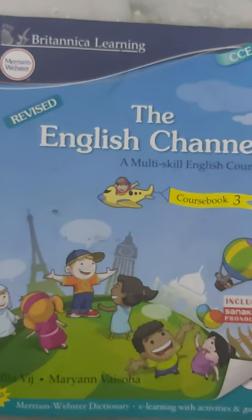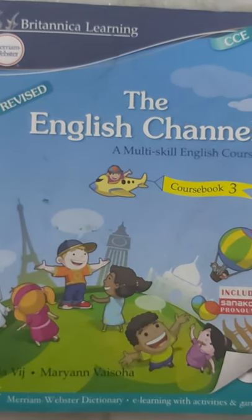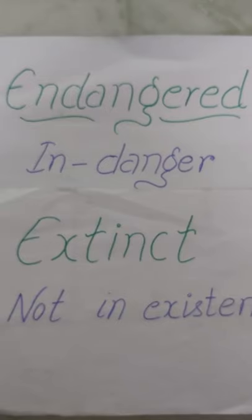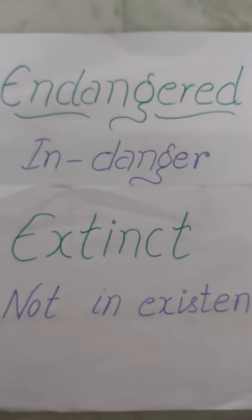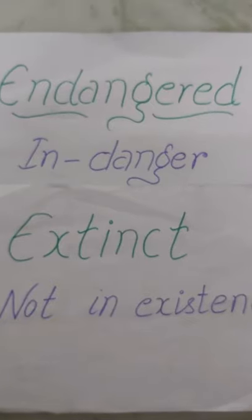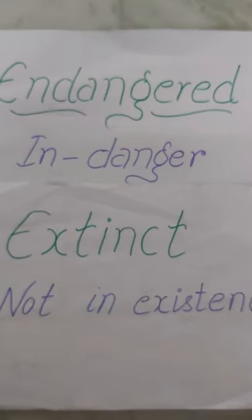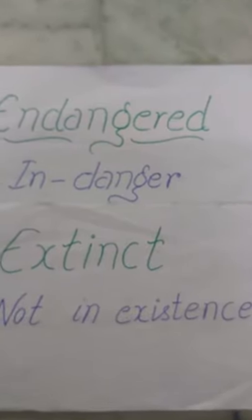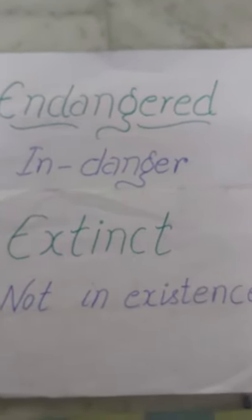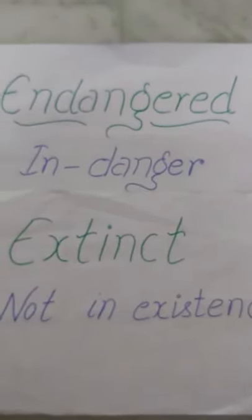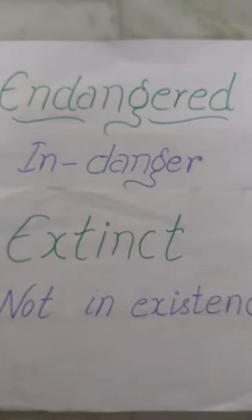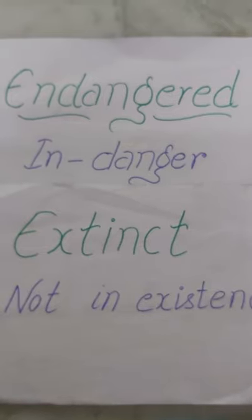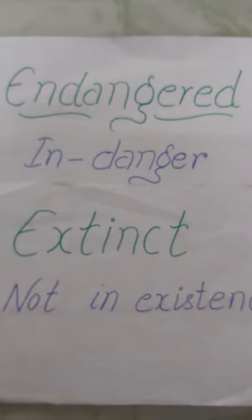Before starting the chapter I want to introduce you with two new words — the first is 'extinct' and the second is 'endangered'. Extinct means not in existence. You must have heard about dinosaurs. Are they present now? No, they are not present. It means these animals are no longer present in this world.